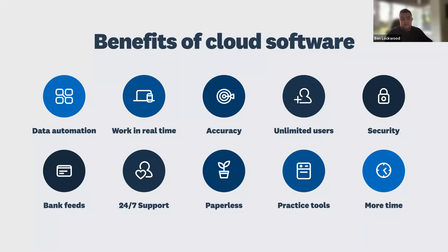Open API means cloud accounting software offers bank feeds with almost all high street banks. This allows you and your accountant to have the most up-to-date financial data. This, combined with other data automation tools like invoice capturing software — such as HubDoc, where you can take photos of receipts or scan invoices and send them directly to software such as Xero — is driving efficiencies.